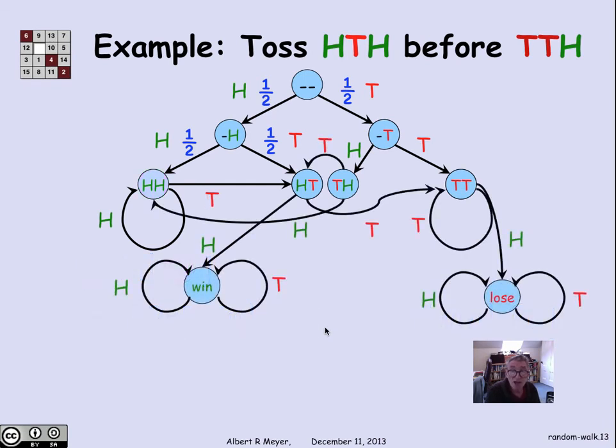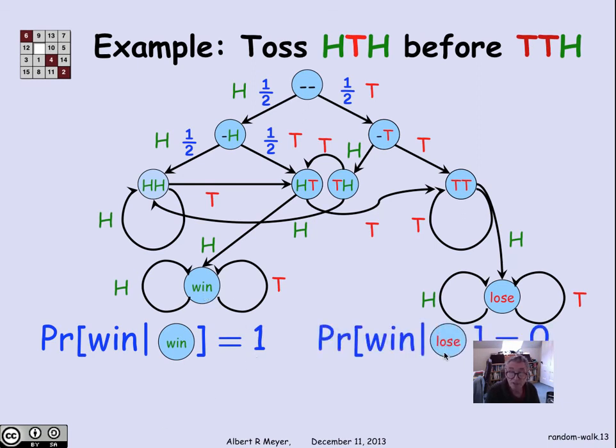Well, there's what the whole diagram looks like. In particular, once you've flipped HT, if you then flip an H, you've won because you got to HTH first. And you stay in the win state forever. Or alternatively, once you flip TT, if you flip an H, you've lost because TTH has come up first. If you flip a T again, you stay in state TT. What we can say is the probability of winning, if you're in the win state, is 1. And the probability of winning, if you're in the lose state, is 0.